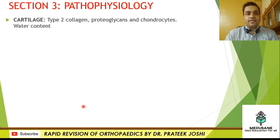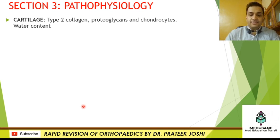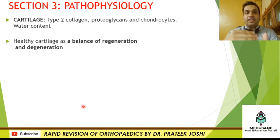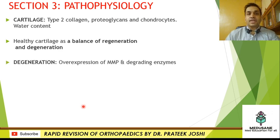Moving on to pathophysiology: an important MCQ point is that the most common collagen found in cartilage is type 2 collagen. The other components are proteoglycans, chondrocytes, and a high water content. A healthy cartilage is not a static entity — it is a continuously dynamic system where cartilage undergoes degeneration while newly regenerated cartilage takes its place. Healthy cartilage is therefore a balance or equilibrium of regeneration and degeneration. Degeneration, apart from biomechanical trauma, is caused by overexpression of matrix metalloproteinases and other degrading enzymes.